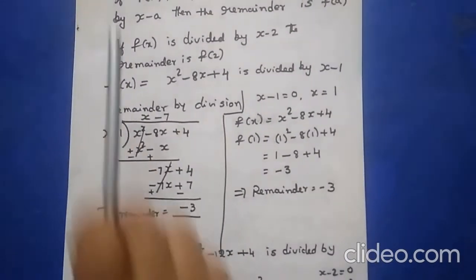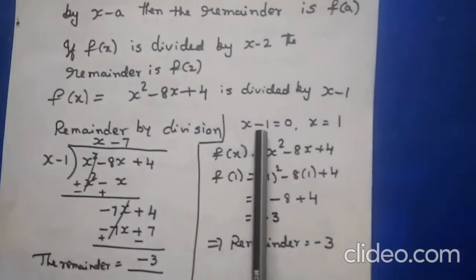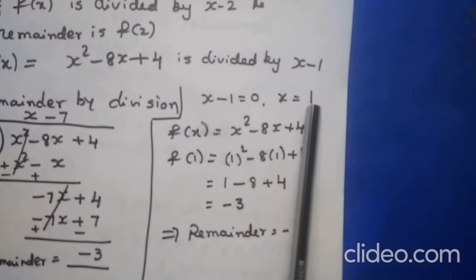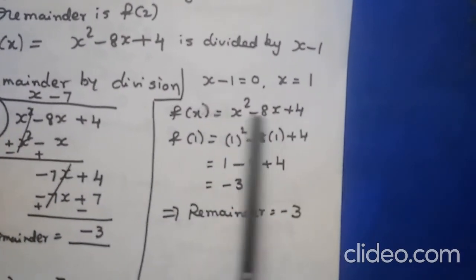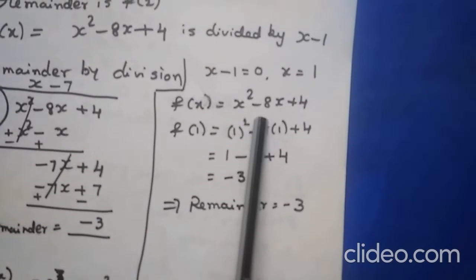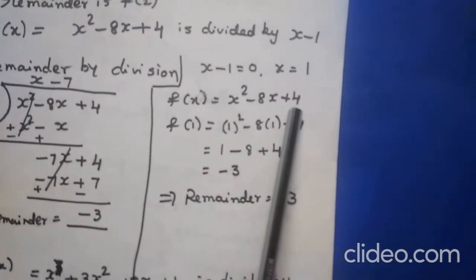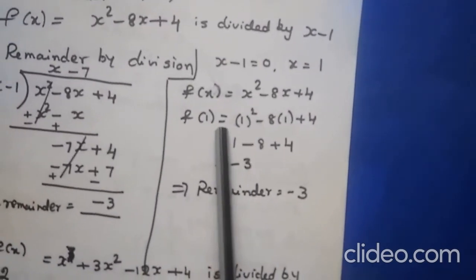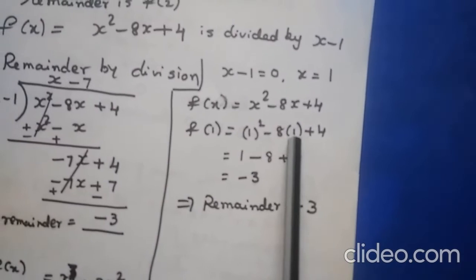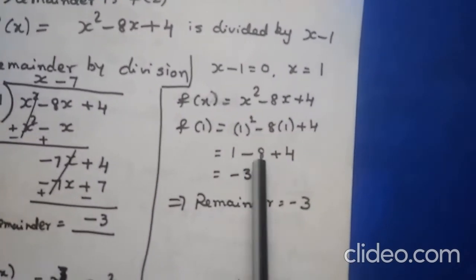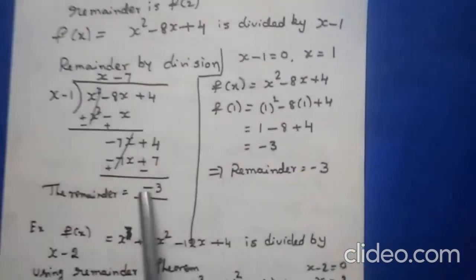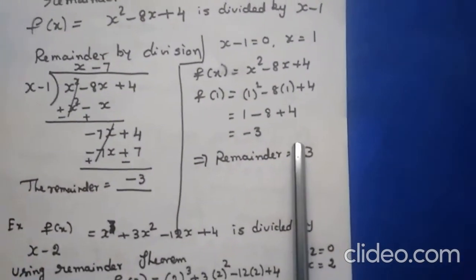Now using the Remainder Theorem: x - 1 = 0, so x = 1. The polynomial is f(x) = x² - 8x + 4. Substitute x = 1: f(1) = 1² - 8(1) + 4 = 1 - 8 + 4 = -3. The remainder is -3, same as by long division. Now one more example.